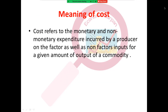First of all, let's discuss what is the meaning of cost. Cost refers to the monetary and non-monetary expenditure incurred by a producer on factor as well as non-factor inputs for a given amount of output of a commodity. The producer, when it produces a commodity, requires factors and non-factor inputs. This expenditure can be in monetary terms, in the form of money, or in other forms such as physical or psychological form. We call this cost.